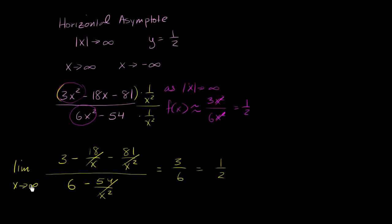If you said as x approaches negative infinity, it would be the same thing — those terms approach 0 and you again approach 1/2. So the horizontal asymptote is y equals 1/2.